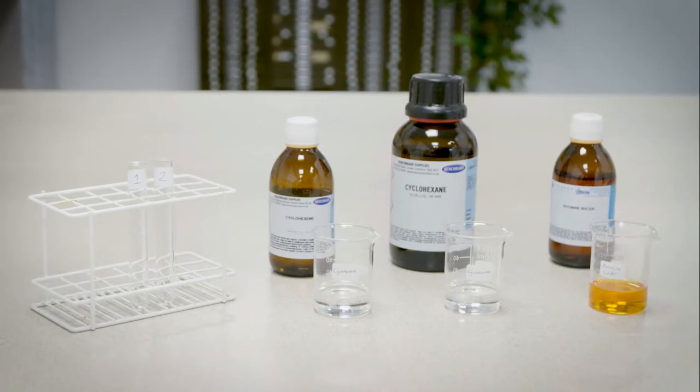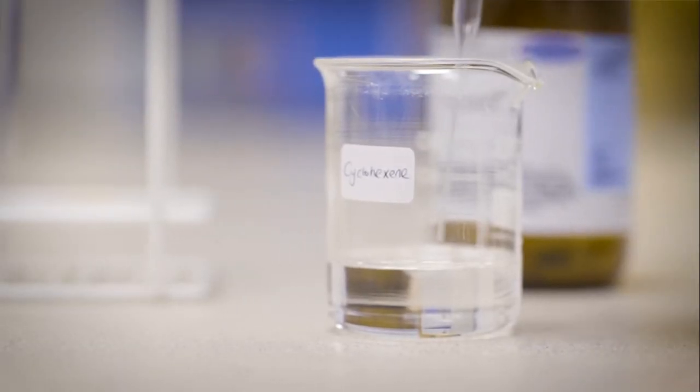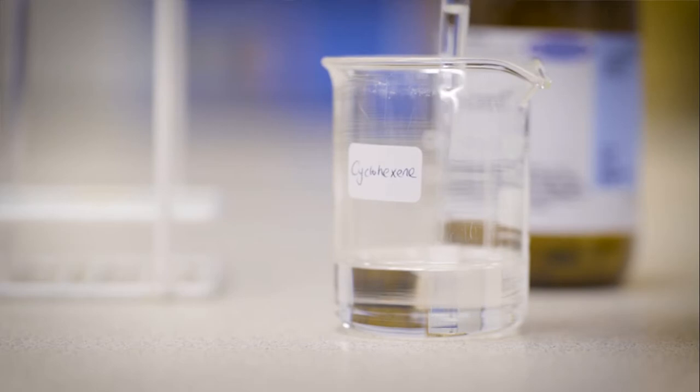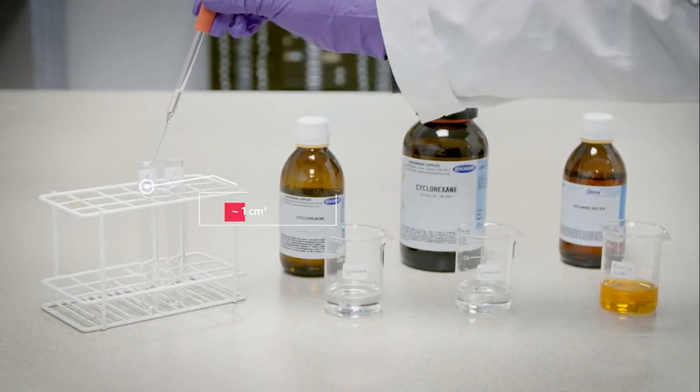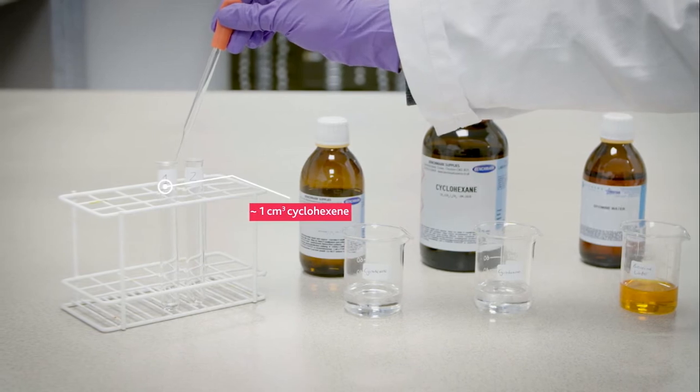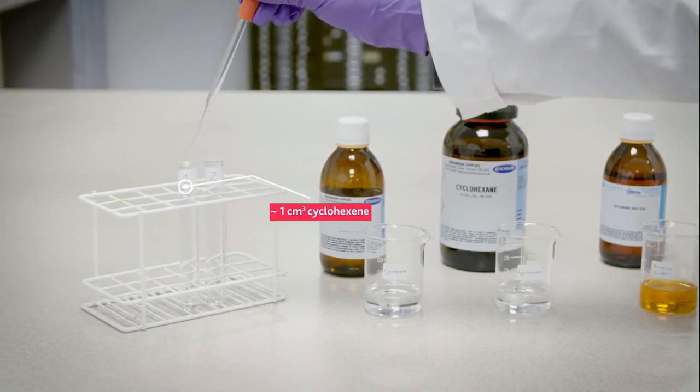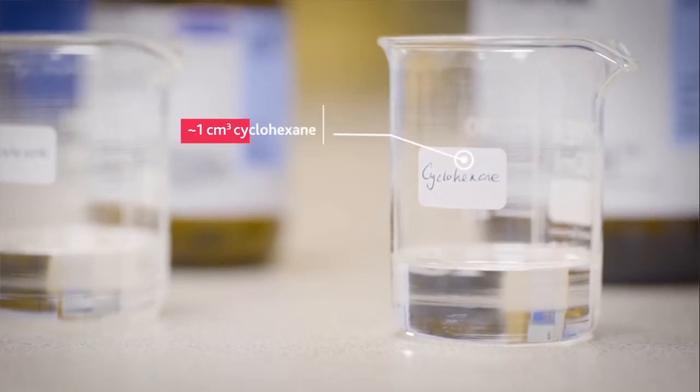Two test tubes should be labelled 1 and 2. In test tube 1, cyclohexane is added. In test tube 2, cyclohexane is added.